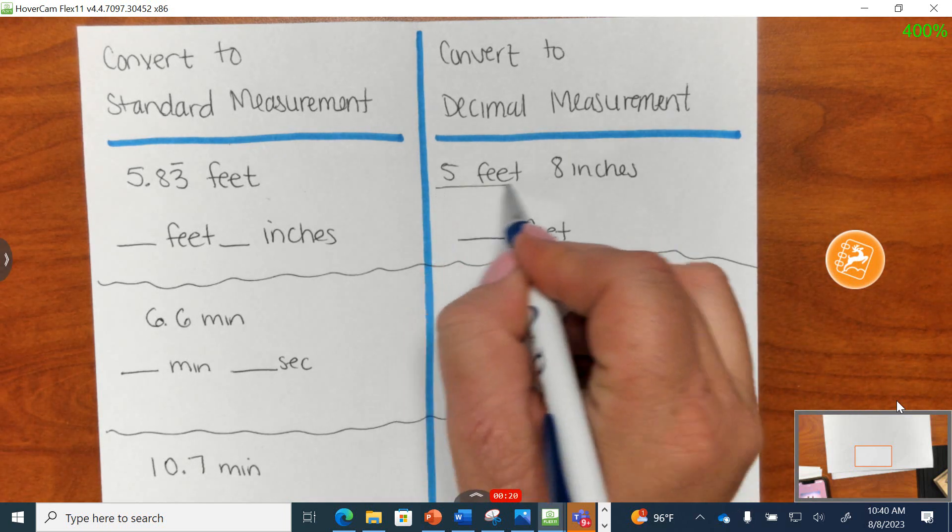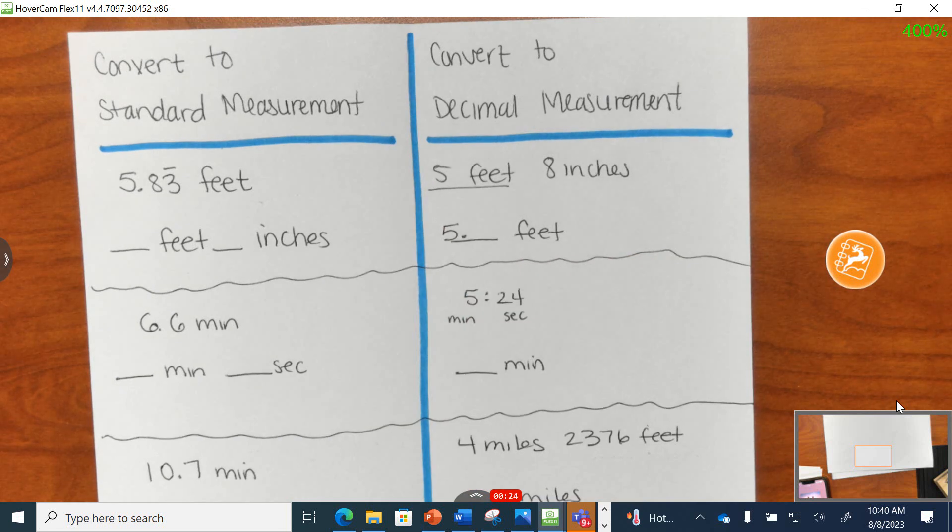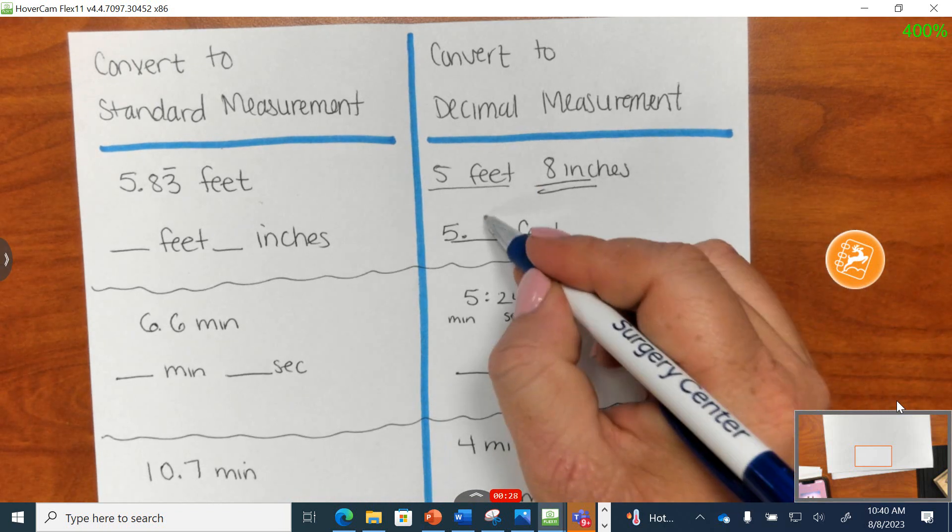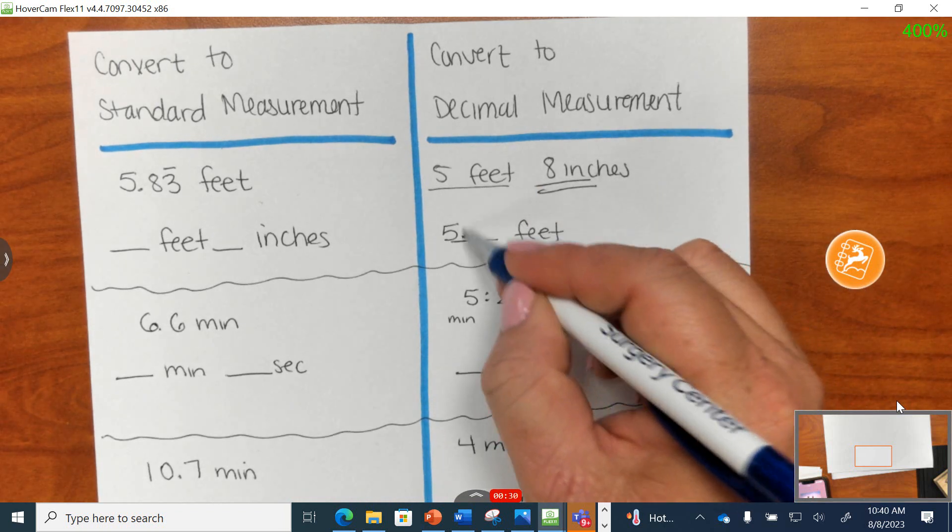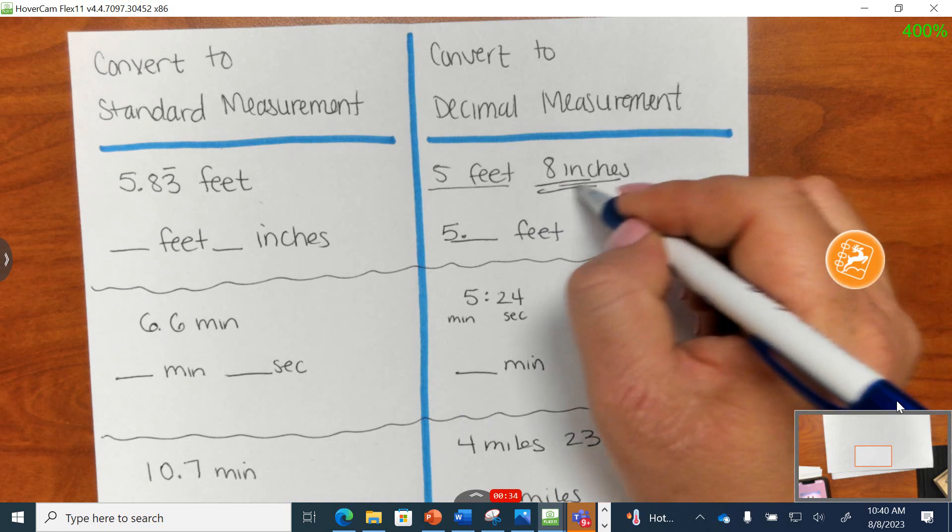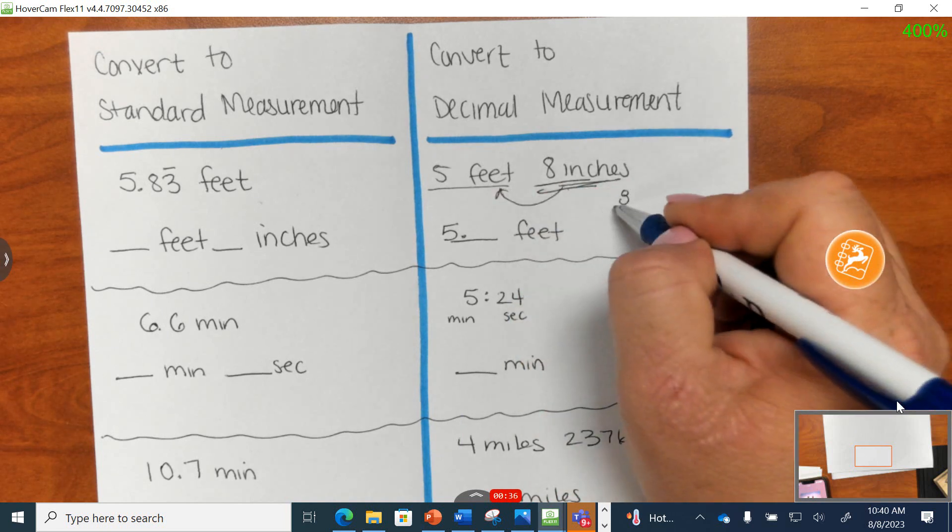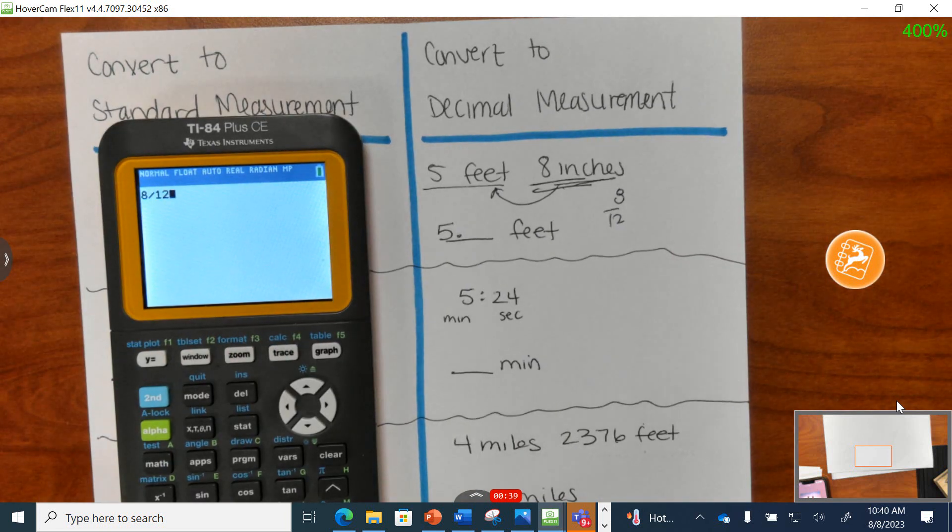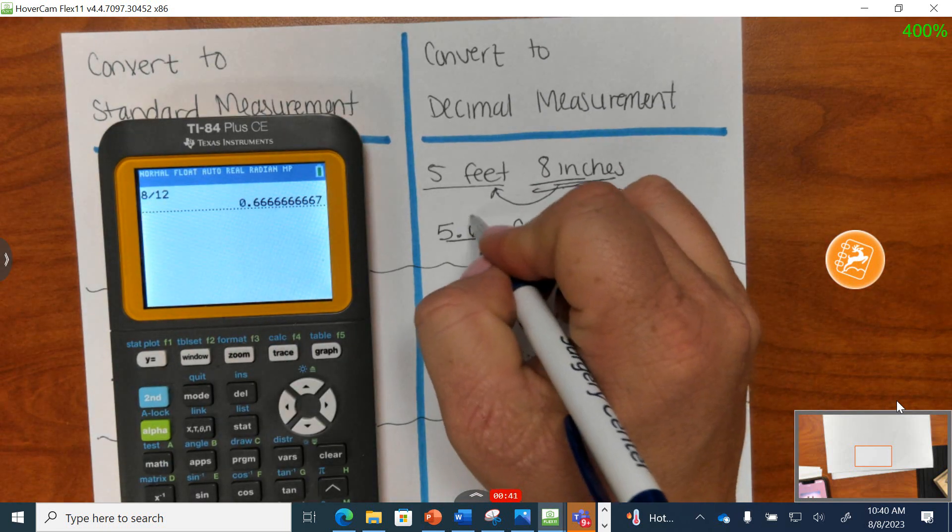Well, there's officially 5 feet, so 5 decimal. You're writing down everything that I write down. And now I need to take this 8 inches and write it as a partial. So 8 divided by, ask yourself, how many inches are there in 1 foot? 12. Grab your calculator, please. Taking 8 divided by 12 and writing 0.6 repeating.